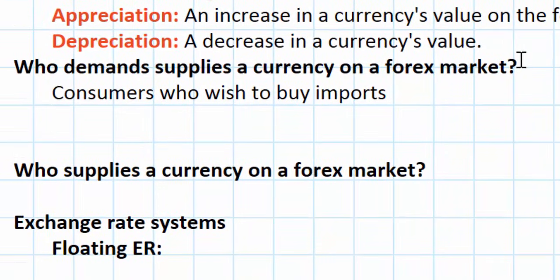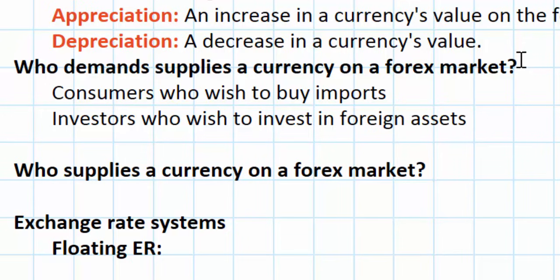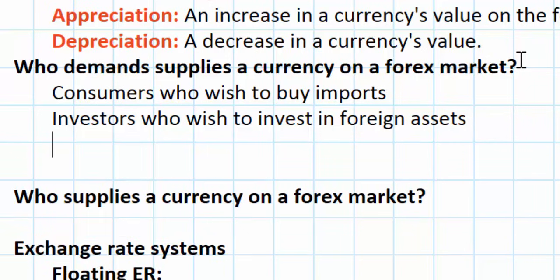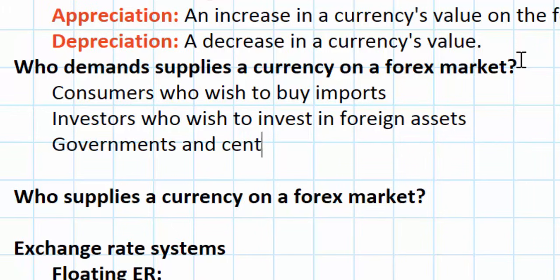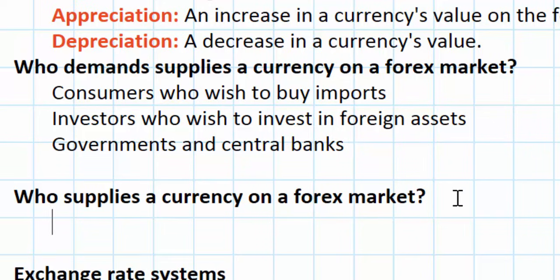European consumers are not the only demanders of US dollars, nor are American consumers the only demanders of euros. Investors who wish to invest in foreign assets also demand foreign currencies — a European buying a US house, US government bonds, or putting money in a US bank must exchange euros for dollars. The third major demander is governments and central banks. The European Central Bank holds billions of dollars of US government bonds. So the primary demanders are consumers buying imports, investors in foreign assets, and governments and central banks.